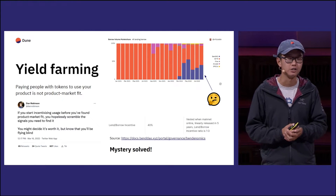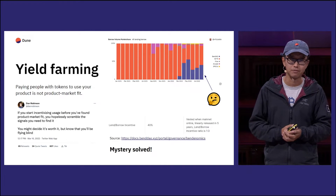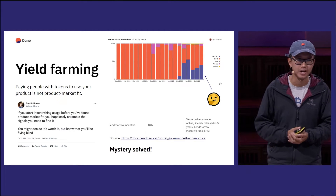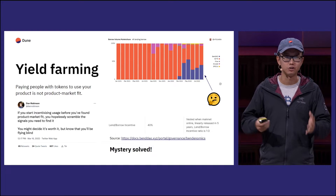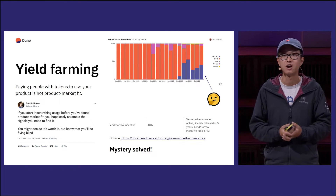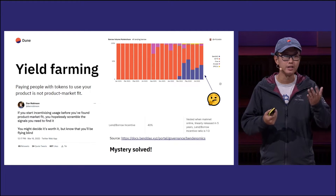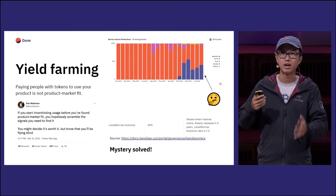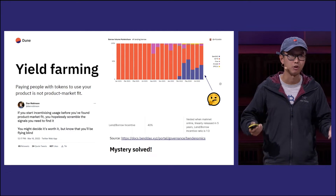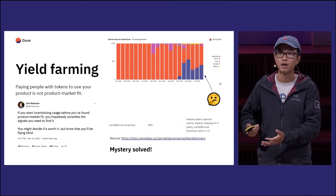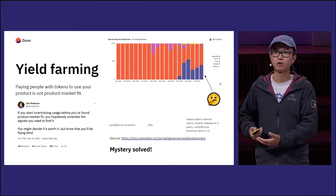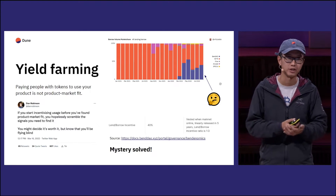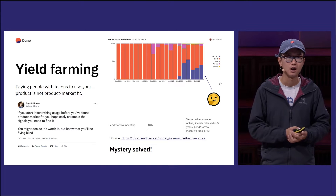The second pitfall is yield farming. In essence, paying people with tokens or pseudo-equity to use your product is not product-market fit. I really like this tweet from Dan Robinson: if you incentivize usage before you have product-market fit, you're basically flying blind. You have no idea who your actual users are — are people here because you're paying them and will just leave as soon as you turn off the yield incentives?